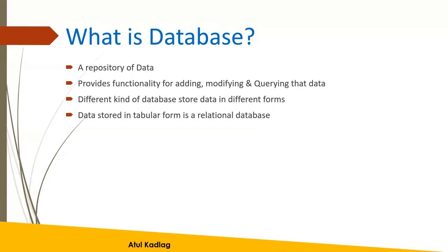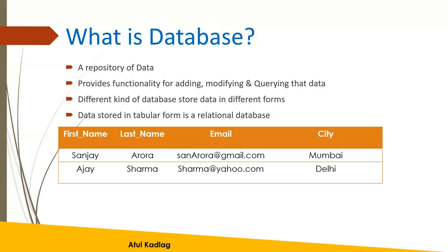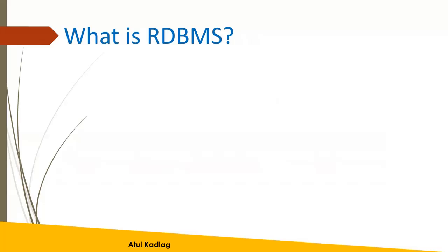In a relational database, data is stored in tabular form. For example, if we want to store a person's details like first name, last name, email, and city, the data is stored in columns and rows. This table structure is what forms the repository — the database — where all these tables are stored.